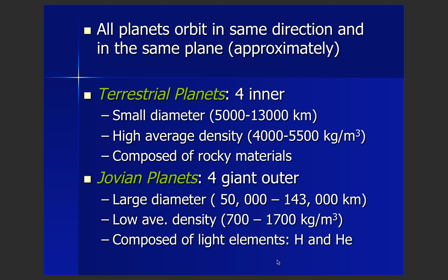Our terrestrial planets are what we call the four inner planets. They're smaller in diameter and have high average densities. They're composed of rocky materials. This is different than our outer planets, the Jovian planets, also sometimes called the gas giants.